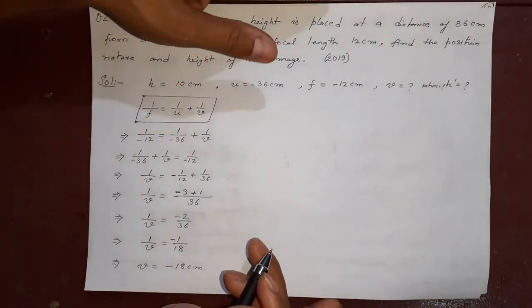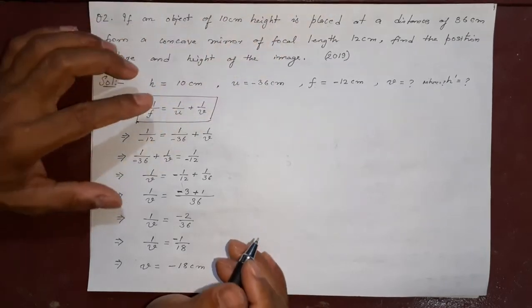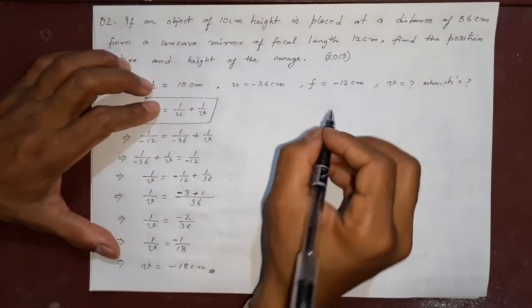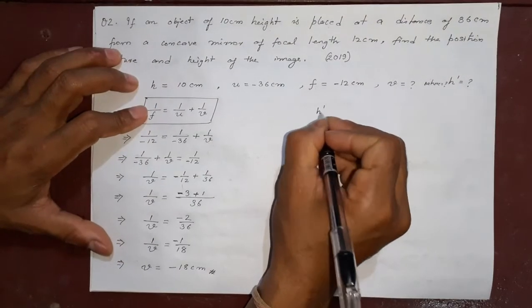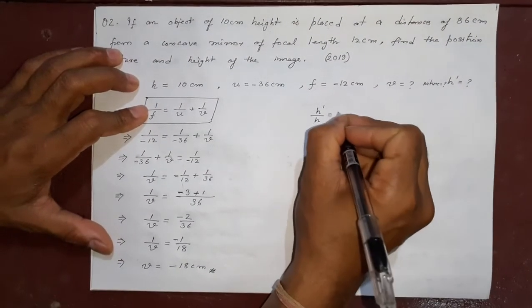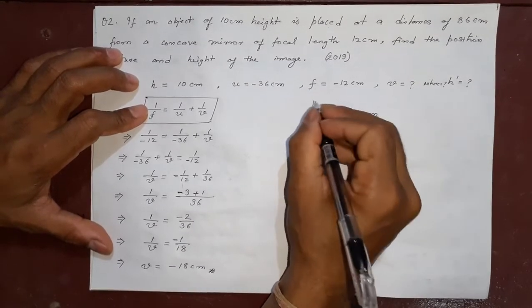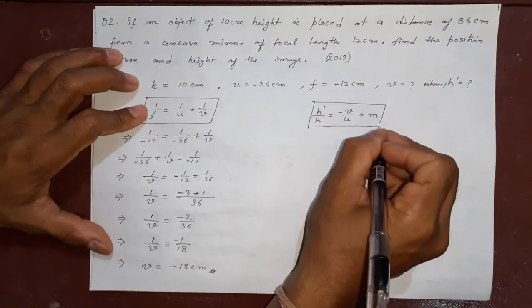Let's again confirm from the height also. Height formula is what? h dash by h equal to minus v by u equal to m. You remember, this is the magnification formula.